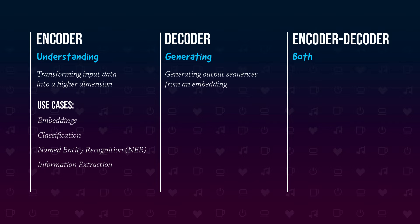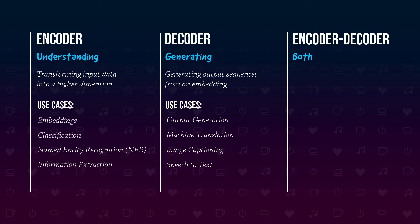A decoder, on the other hand, generates output from an embedding of some sort. The embedding here can be any kind of vectorized representation of the input data. This can be used for text generation like ChatGPT, machine translation, image captioning, and speech to text. Although we think a lot about textual input, image captioning is a task for which a transformer needs to take an image as input, or maybe an image and a text prompt.